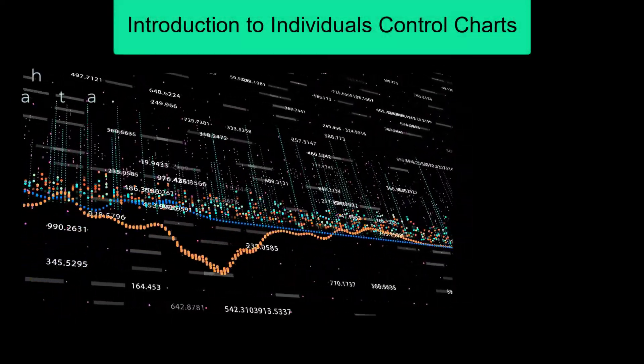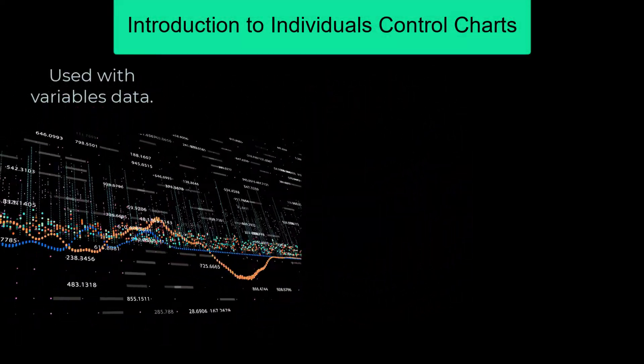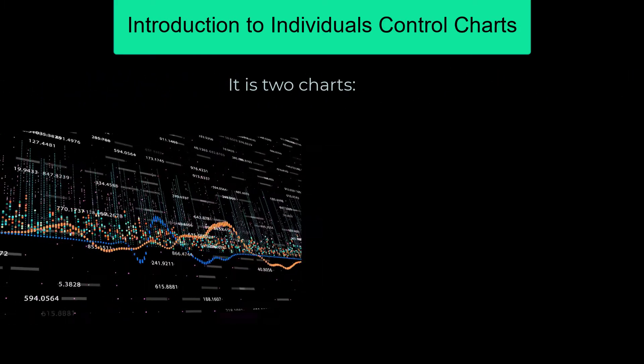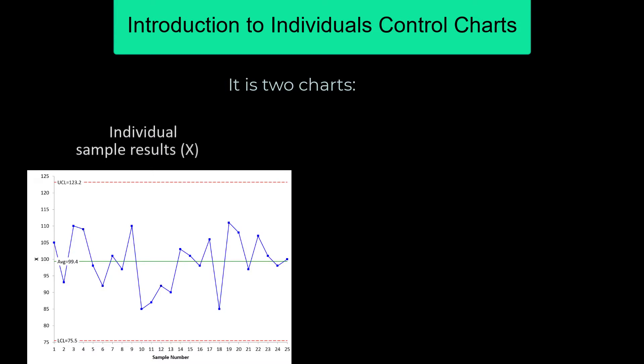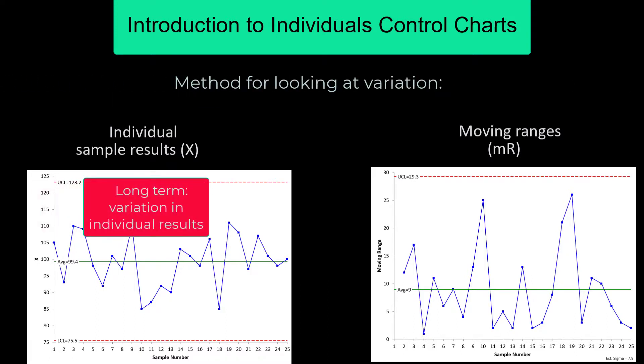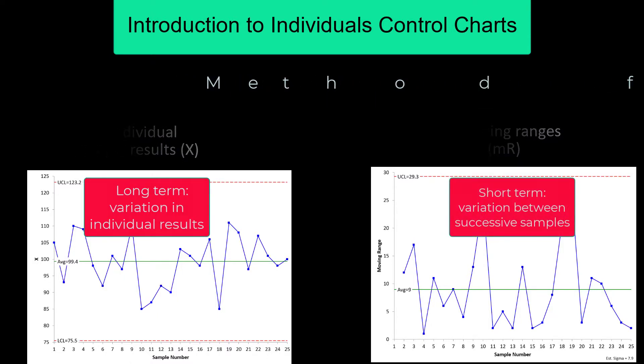Individual control charts are typically used with variables data, things you can measure or count, and it's really two charts. There's the X chart, where you plot the individual results over time, but there's also the moving range chart, where you're going to plot the range between consecutive samples over time. And like all control charts, it looks at variation. The X chart looks at the long-term variation in individual results, where the moving range chart looks at the short-term variation between successive samples.